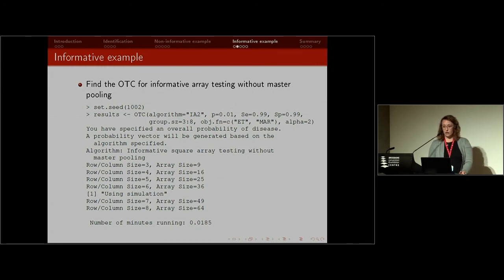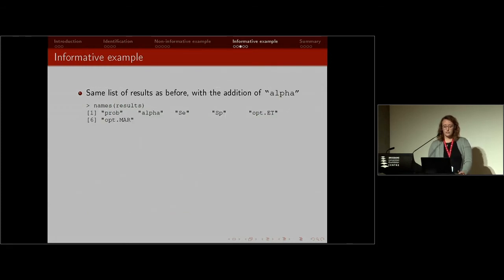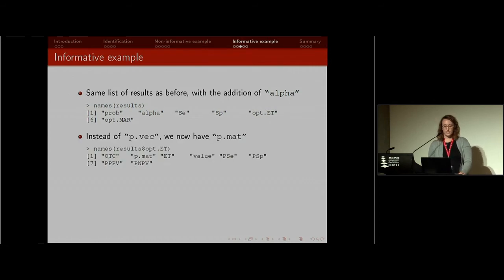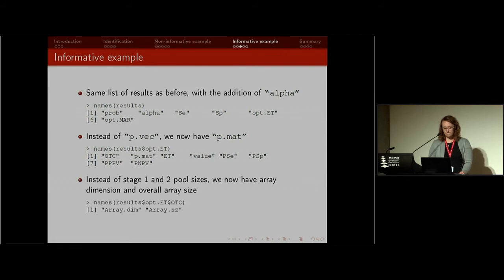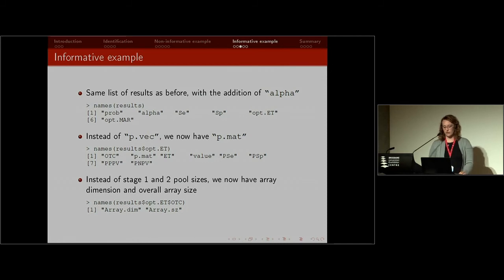It prints some information about the algorithm requested and some progress so you can track how long it's taking. With just a few group sizes, it takes very little time. The list of results is the same as before, with the added alpha — the level of heterogeneity that you specify. And instead of a p.vec object, a vector of probabilities, it now prints out the matrix of probabilities arranged in the gradient method. With array testing, you get the array dimension and the overall array size, so you know how many individuals are in the algorithm.